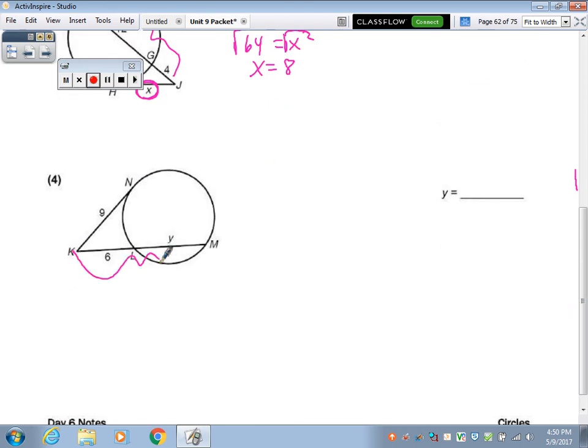Okay, another one. Whole thing here would be Y plus 6. So whole times outside. Is there going to be any question from you guys about what's outside? No. You'll know the 6 is outside, right? Because it's outside the circle. So that's the outside part. So whole times outside, whole times outside. So this is 6Y plus 36. That's 81. Subtract 36 over. Get 45. Divide by 6. 7.5.